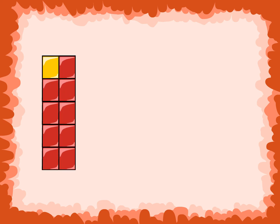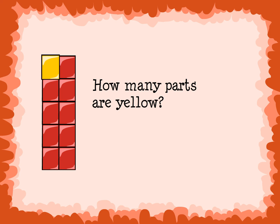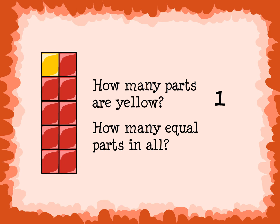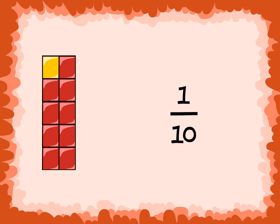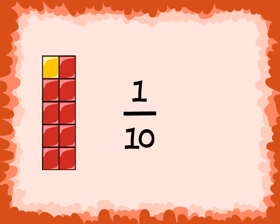Now let's look at this rectangle. How many parts of this rectangle are yellow? 1 — which is the numerator. And how many equal parts are there in all? 10 — which is the denominator. What is the fraction for the yellow part of the rectangle? 1 over 10, or 1 tenth.